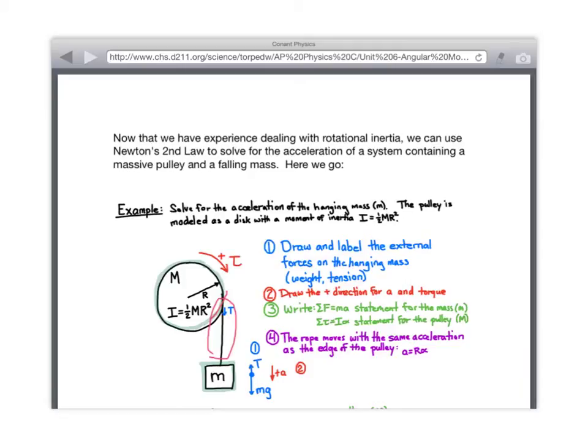Next, we've got to draw and label positive directions for the torque and for the force. Let's pick clockwise for the torque and down as positive for the mass. Then, step three, we're going to write Newton's second law statements. But here's the kicker. The mass is going to have an F equals MA statement. But the pulley, because it's spinning, is going to have a net torque equals I alpha statement. Right?